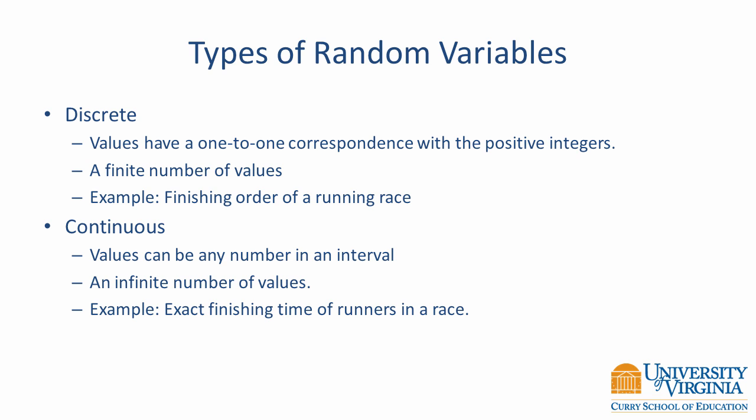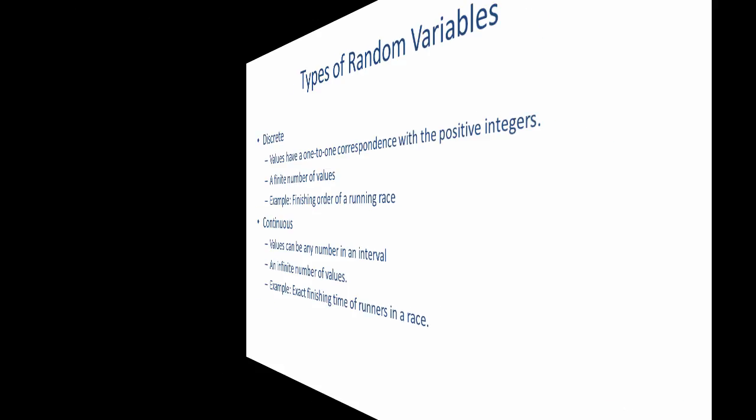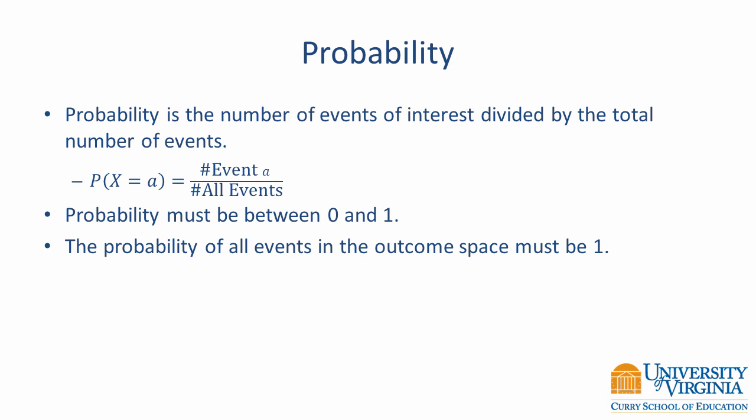Before discussing probability distributions, we will review basic probability. In a frequentist paradigm, probability is defined as the number of events of interest divided by the total number of events — it is a relative frequency. Additional probability axioms state that the probability must be between 0 and 1 inclusive, and the total probability of all events in the outcome space must be 1.